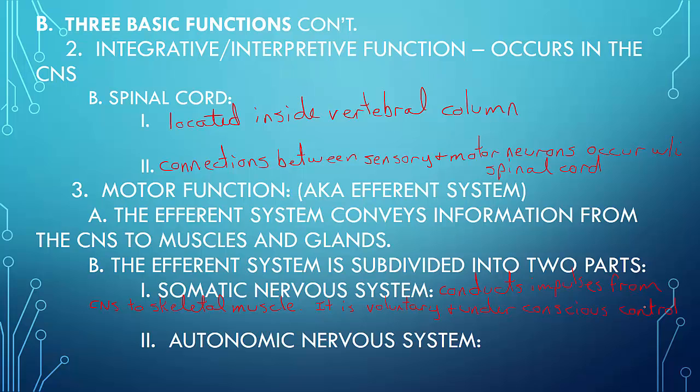The other part of the efferent system is the autonomic nervous system. And the autonomic nervous system has these impulses going from the CNS to the smooth muscles. By smooth muscles, I mean the intestine, the bladder, the uterus, the cardiac muscle, and glands. This is involuntary.